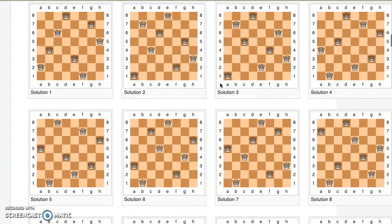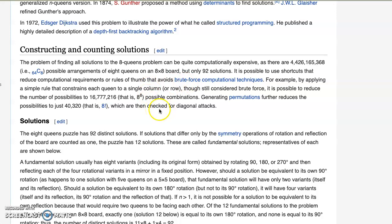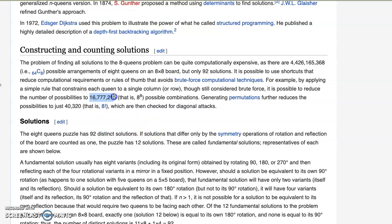There's only 92 distinct solutions for the eight queens problem, and there's 16 million possible solutions that we could go through and solve through brute force.